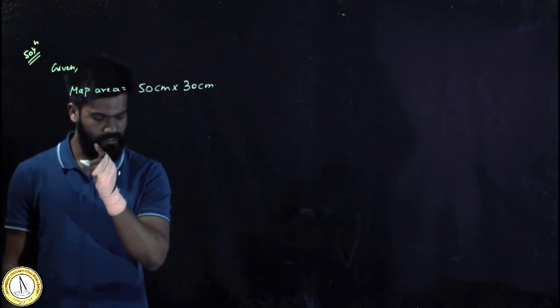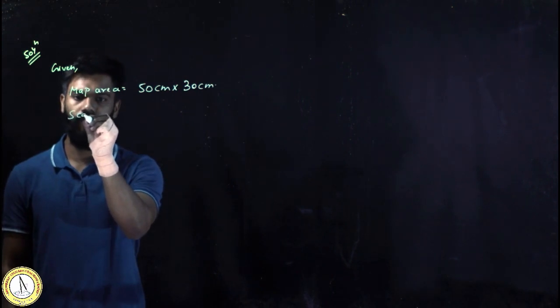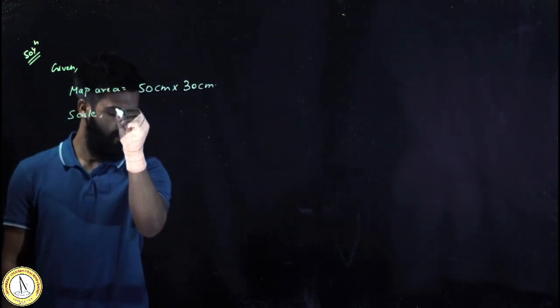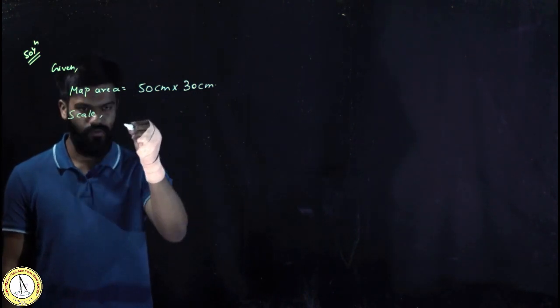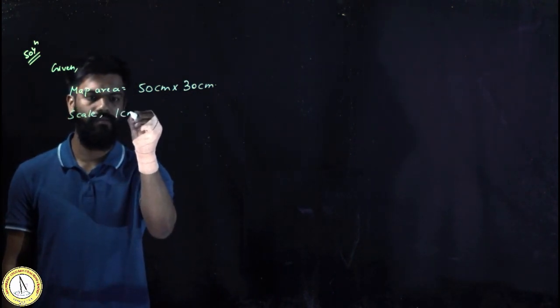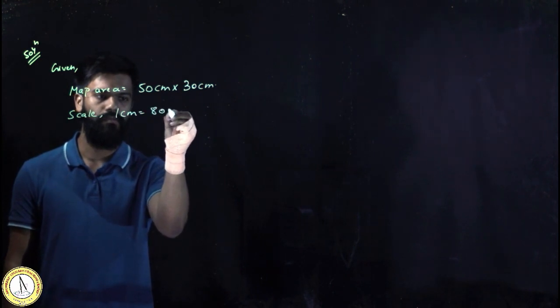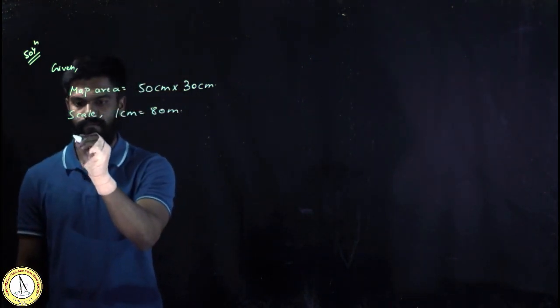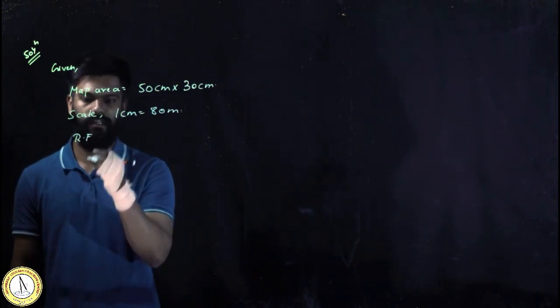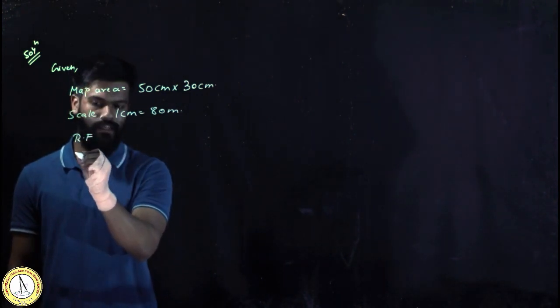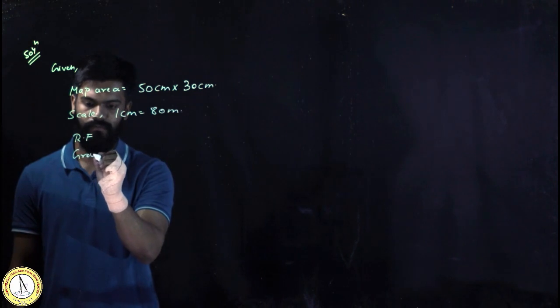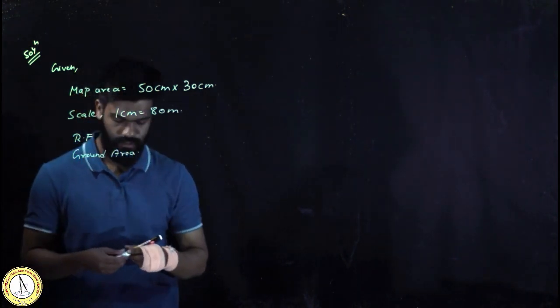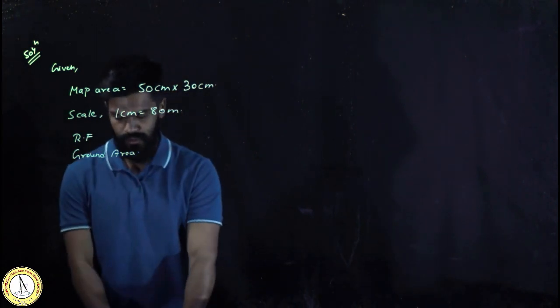Then they have given that the scale used for this purpose is 80 meters to 1 centimeter. So I can write 1 centimeter is equivalent to 80 meters. This is given and I need to find out the RF. From here I need to find out the ground area. These two things I need to find out.